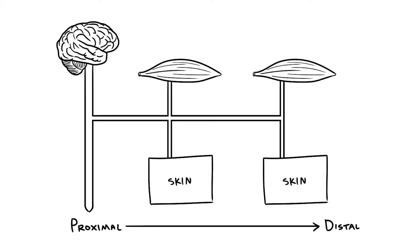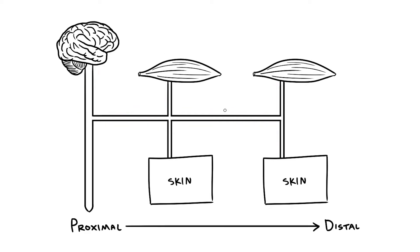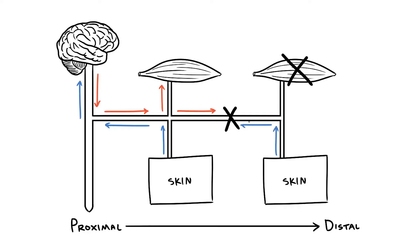Why is this? Normally, nerves provide a route for motor signals to travel out from the brain and sensory signals to return back. If a nerve gets damaged, motor signals are unable to travel beyond the injury, meaning any muscles distal to that point won't receive innervation. Similarly, areas of skin beyond the injury will be unable to send sensory information back to the brain, and so these areas will experience a loss of sensation.